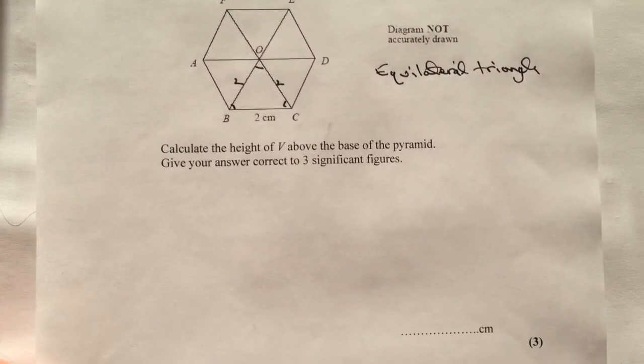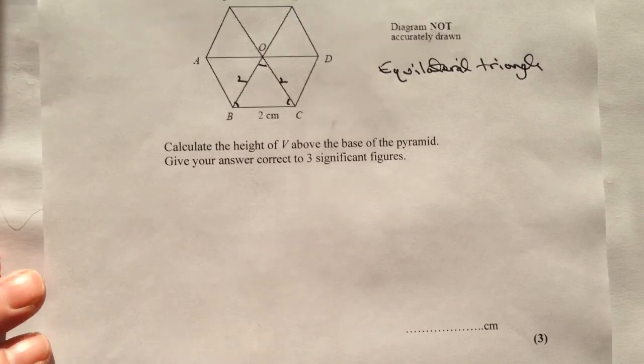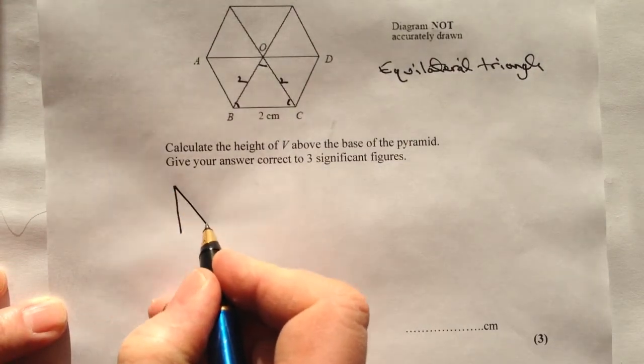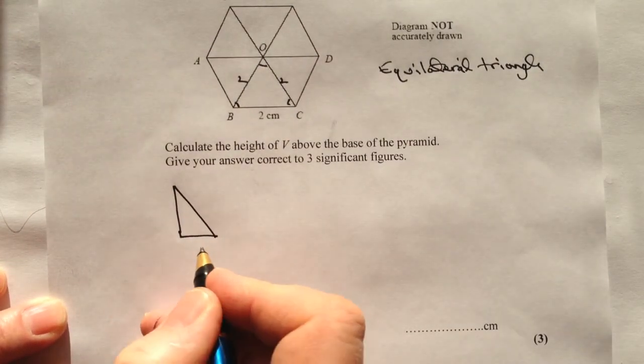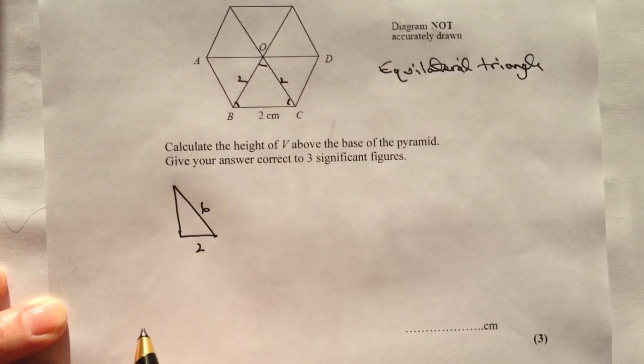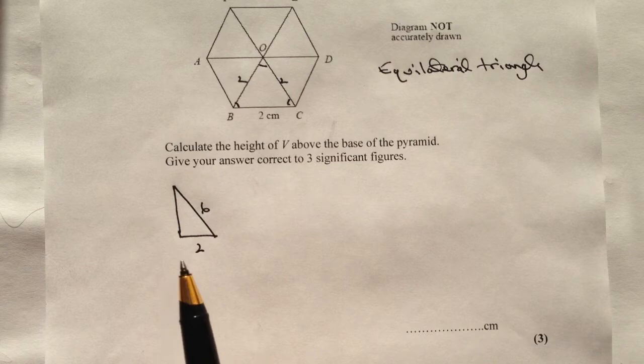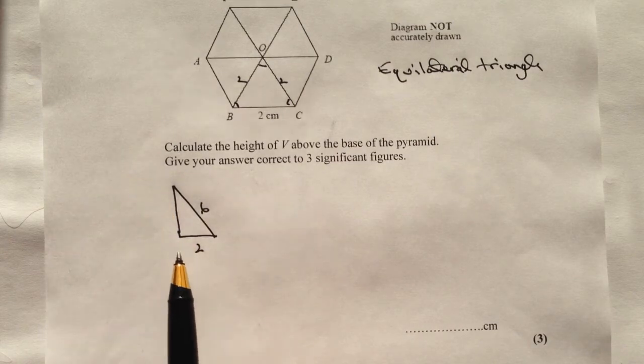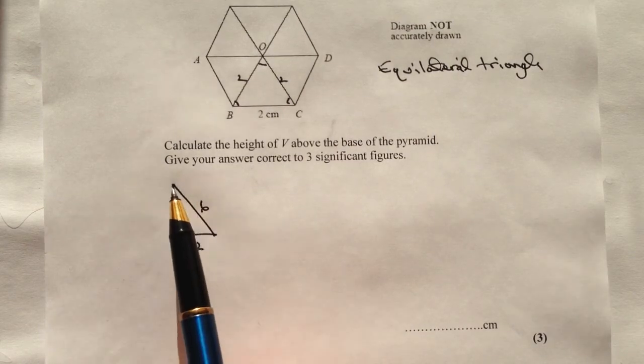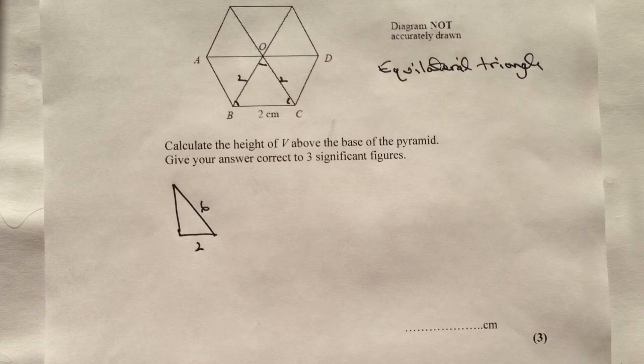So what we've got then is a little bit of Pythagoras that we need to do. So if I just recreate that triangle here, I've got something like this and I'm saying that's 2 and that's 6. Well as you know from Pythagoras, the sum of the square of this side and the square of this side equals the sum of the square of that side.